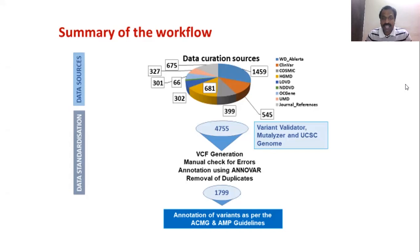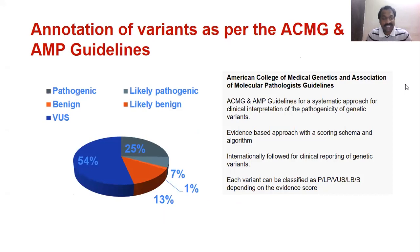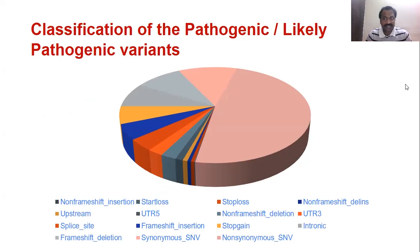We then performed ACMG-AMP classification of these variants. 54% of the variants belong to the VUS category, 25% to the pathogenic category, 13% to likely benign, and 7% to the benign category. Different types of mutations are present spanning across the ATP7B gene, including frameshift insertions, splice-site mutations, frameshift deletions, stop-gain, and stop-loss variants.